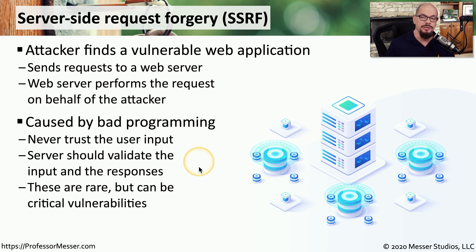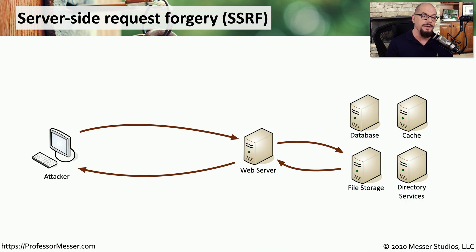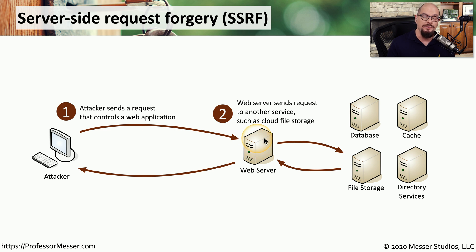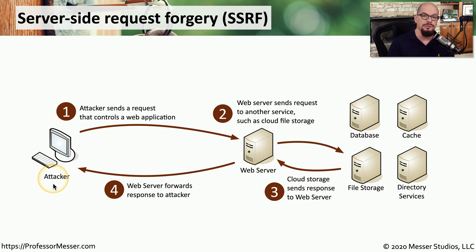The server should always evaluate input and evaluate output to make sure none of that information is unexpected. These are relatively uncommon types of vulnerabilities, but when one is found, it's very important to close it before someone is able to take advantage of that forgery. Here's a visual breakdown of the server-side request forgery. We'll start with an attacker communicating to a web server. They send a request requiring the web server to perform some other function in the background — for example, querying information on a file storage device. That file storage device sends a file or response to the web server, and the web server responds back to the attacker with the information requested. That effectively means the attacker has access to the file storage, even though there is no direct outside access, because they're having the web server perform that access using this forgery vulnerability.